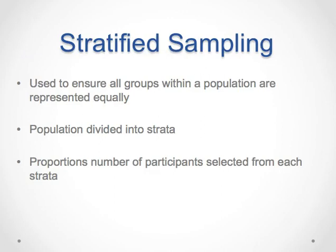A stratified sample is used when there are identifiable subgroups in a population. For example, a researcher could divide a population of Southern Californian residents by age, gender, ethnicity, income, religion, or political party. After dividing the population into these groups — called strata — the researcher then selects a simple random sample from each group or stratum.